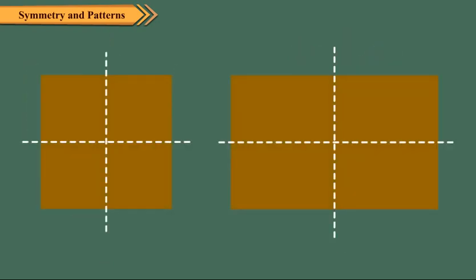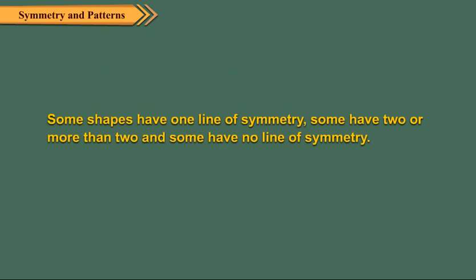Lines of symmetry can be vertical as well as horizontal. Some shapes have one line of symmetry. Some have two or more than two, and some have no line of symmetry.